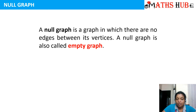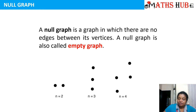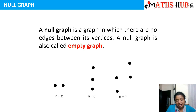The next one is a null graph. A null graph, as the name suggests, has no edges between its vertices — it is also sometimes called an empty graph. You can see a null graph with two vertices and a null graph with three vertices. Any graph which only contains vertices but not edges is a null graph.